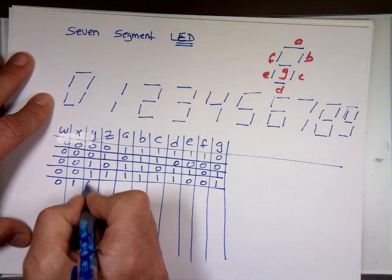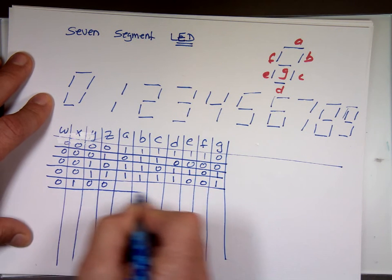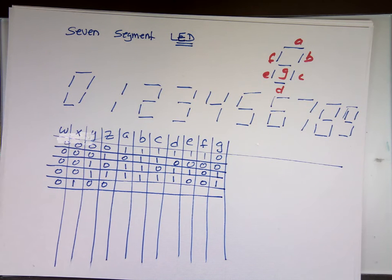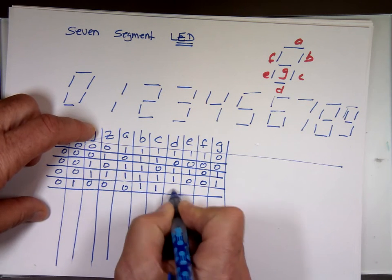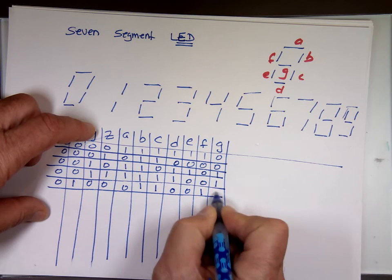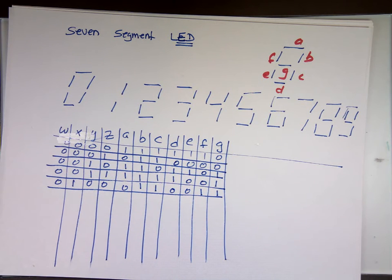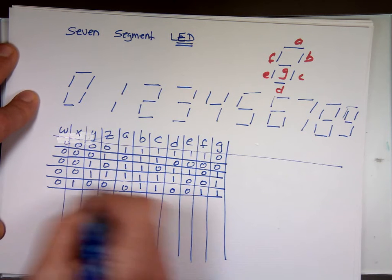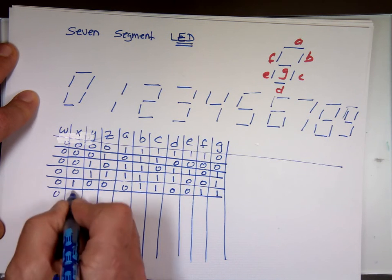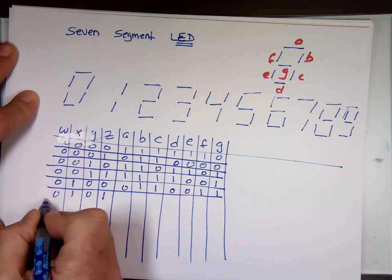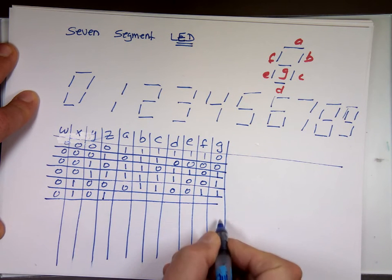0, 1, 0, 0. That's equivalent to 4. A is off, E and D. 0, 1, 0, 1, that's 5. B and E are off.